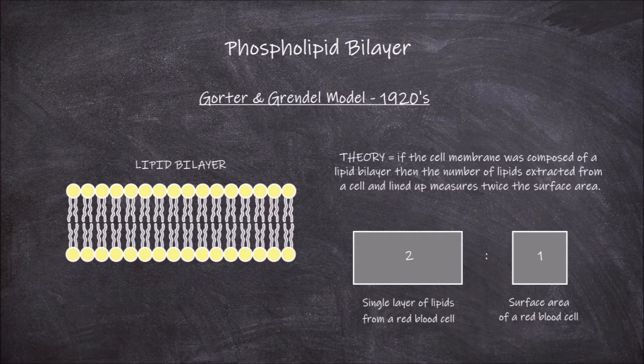This supported the hypothesis and led to the proposal that the cell membrane structure consists of a bilayer of lipids, with the polar hydrophilic heads on the outside and the hydrophobic tails facing inwards.